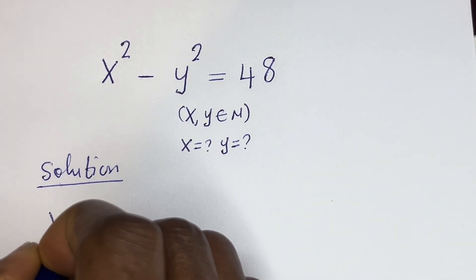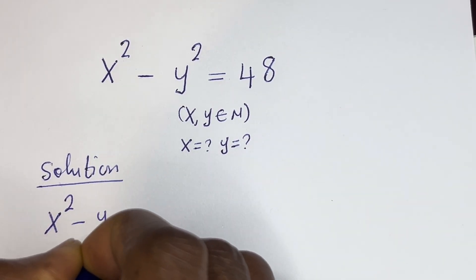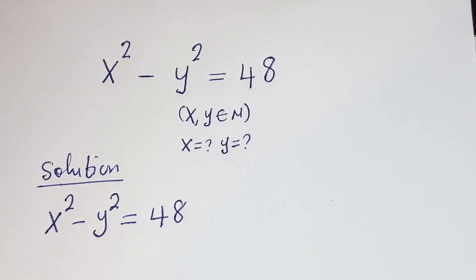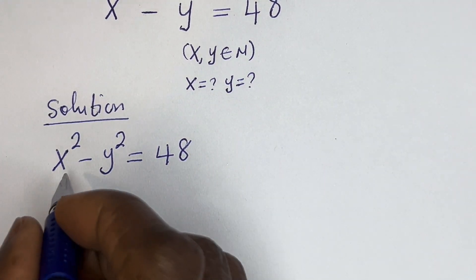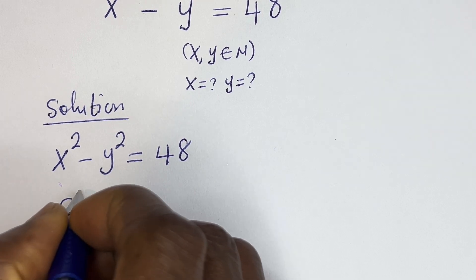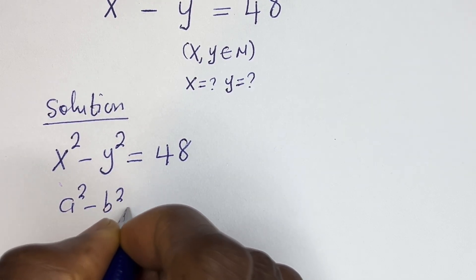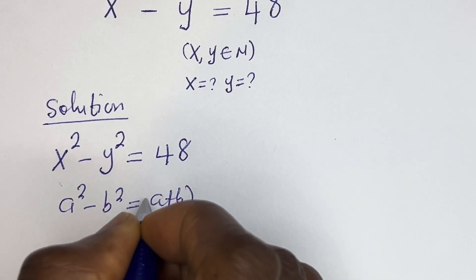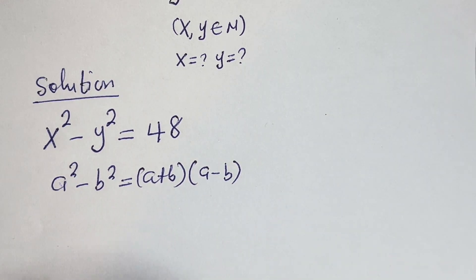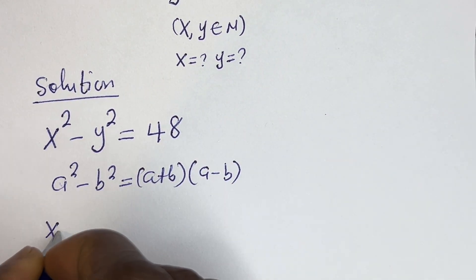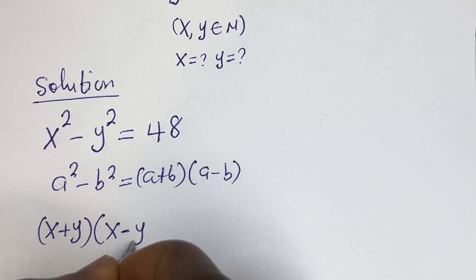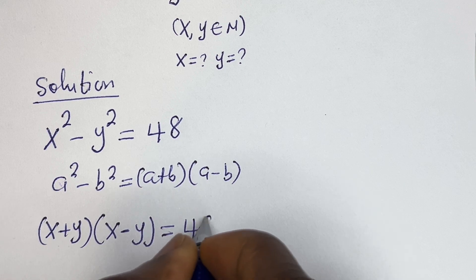We have S squared minus Y squared is equal to 48. This is in the form of a difference of squares. If you have A squared minus B squared, this is equal to (A plus B)(A minus B). So here we have (S plus Y)(S minus Y) is equal to 48.